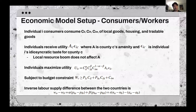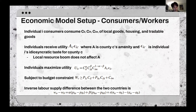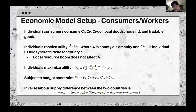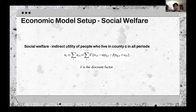On the consumer side of the model, individual consumers consume local goods, housing, and tradable goods. The utility they receive is a function between the county's amenity and the idiosyncratic taste for their county. The local resource boom is assumed not to affect A, which is the county's amenity. This is the utility function that individuals maximize, subject to a budget constraint, and the inverse labor supply difference between the two counties is mapped out with the following equation.